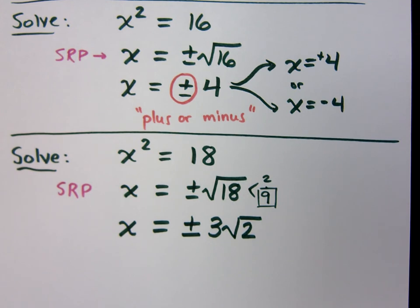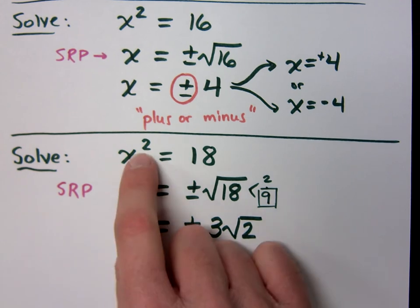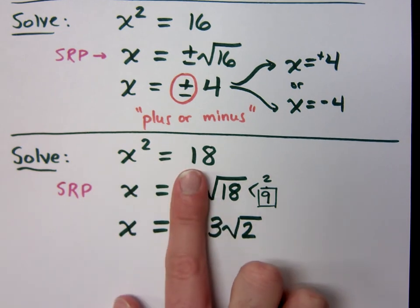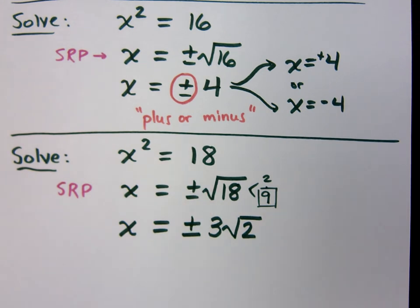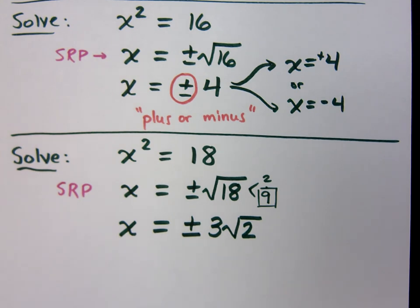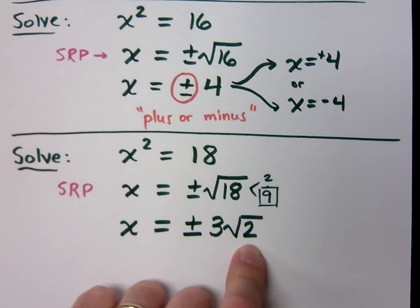Why are we emphasizing the plus or minus? Because this equation has a square — I expect two answers. If I don't have the plus or minus, I'll only get one answer, which means you're missing something. If you don't have the plus or minus, you're missing half your answers. You may have the right 3 square roots of 2, but if you're missing that plus or minus, you're missing half your points. I guarantee that.